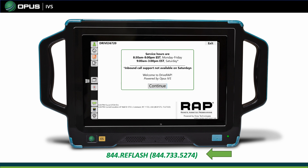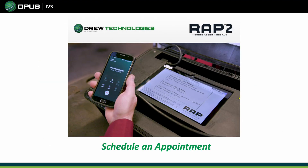Anytime you need to create an appointment, you must call the WRAP number: 844-REFLASH, or 844-733-5274. You can also schedule through the Opus IVS application — call in, get the telephone number, and create an appointment.